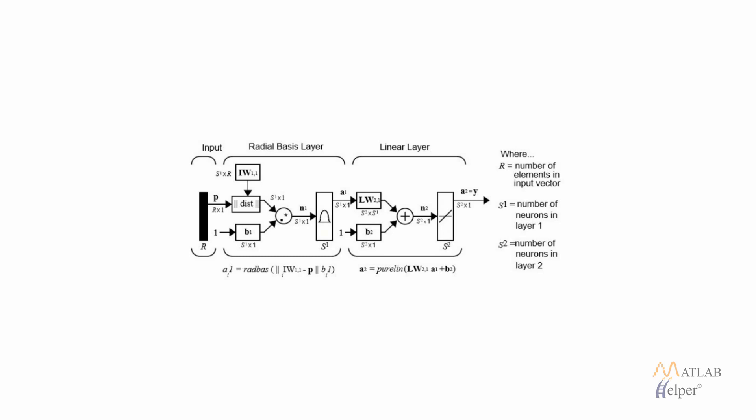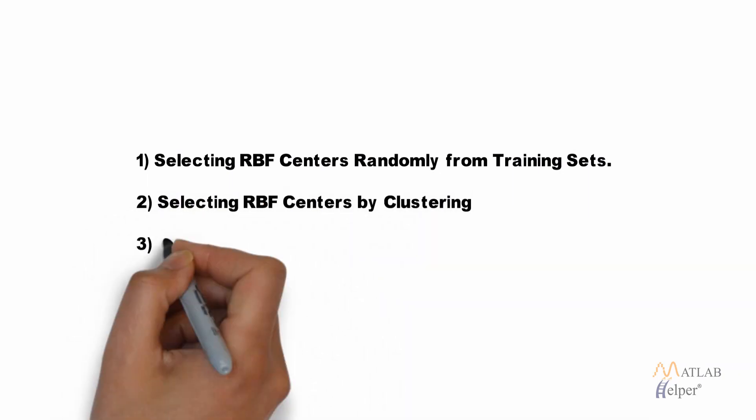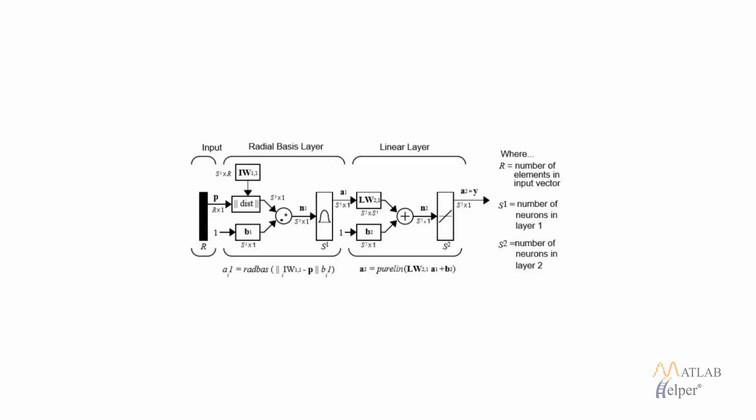There are many methods for defining the position of the hidden layer neurons. The RBF centers can be selected randomly if our training data set fully represents our learning problem, or these RBF centers can be obtained by making use of clustering algorithms like k-nearest neighbors. The position of the hidden layer neurons are represented by their weights.